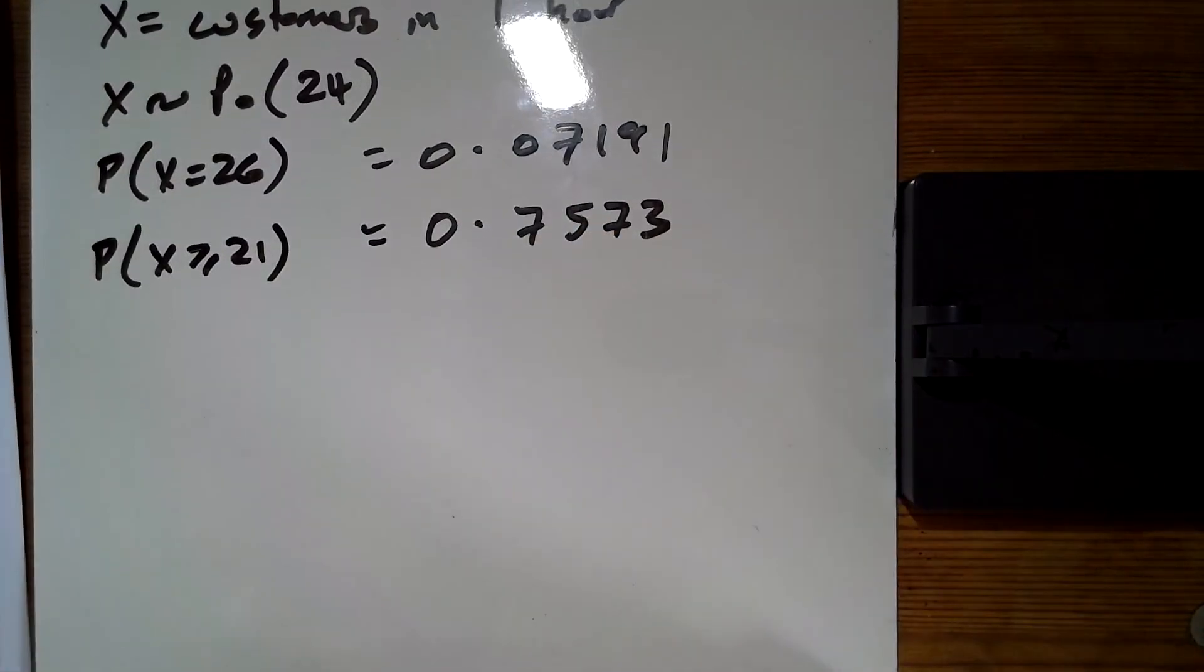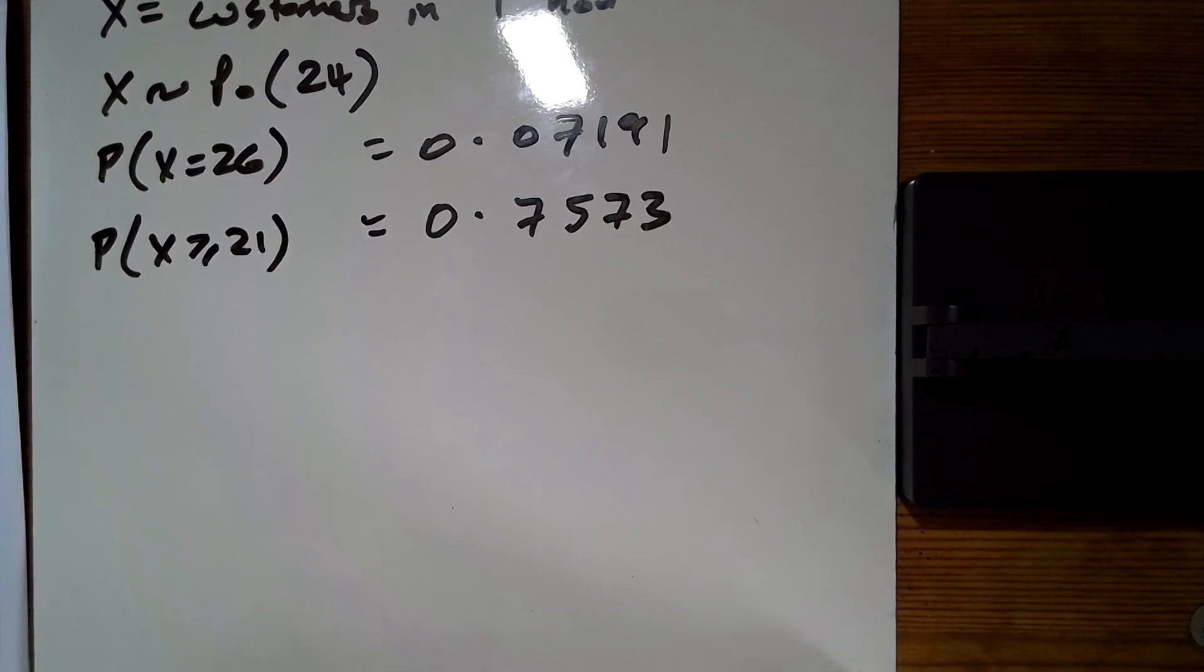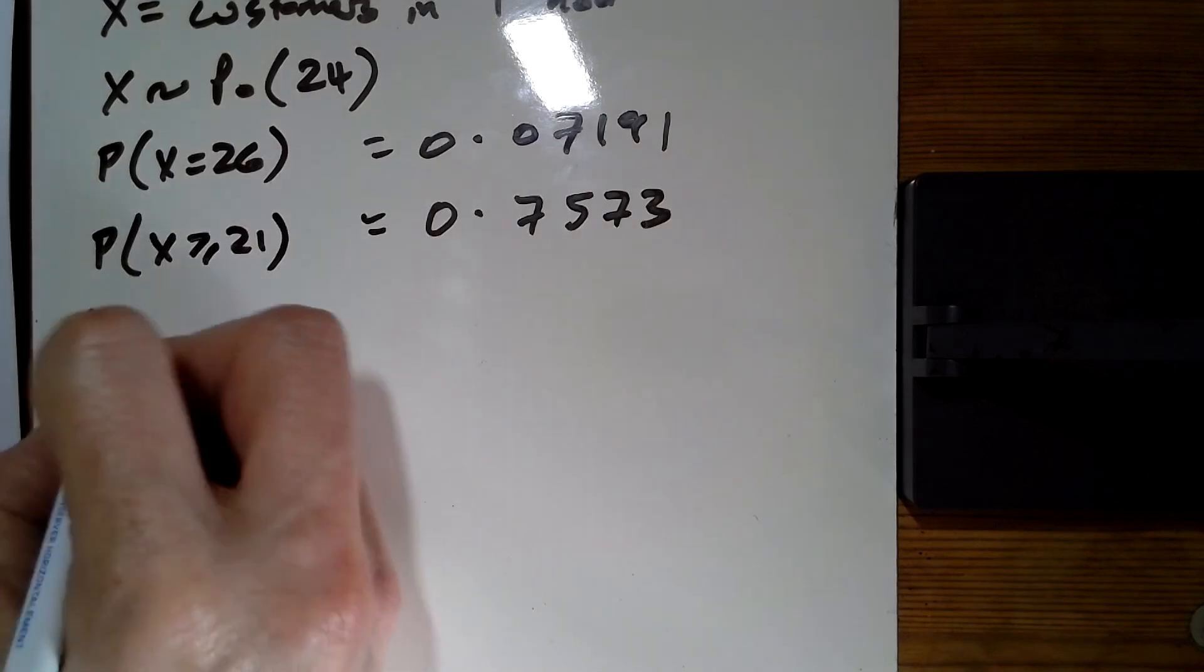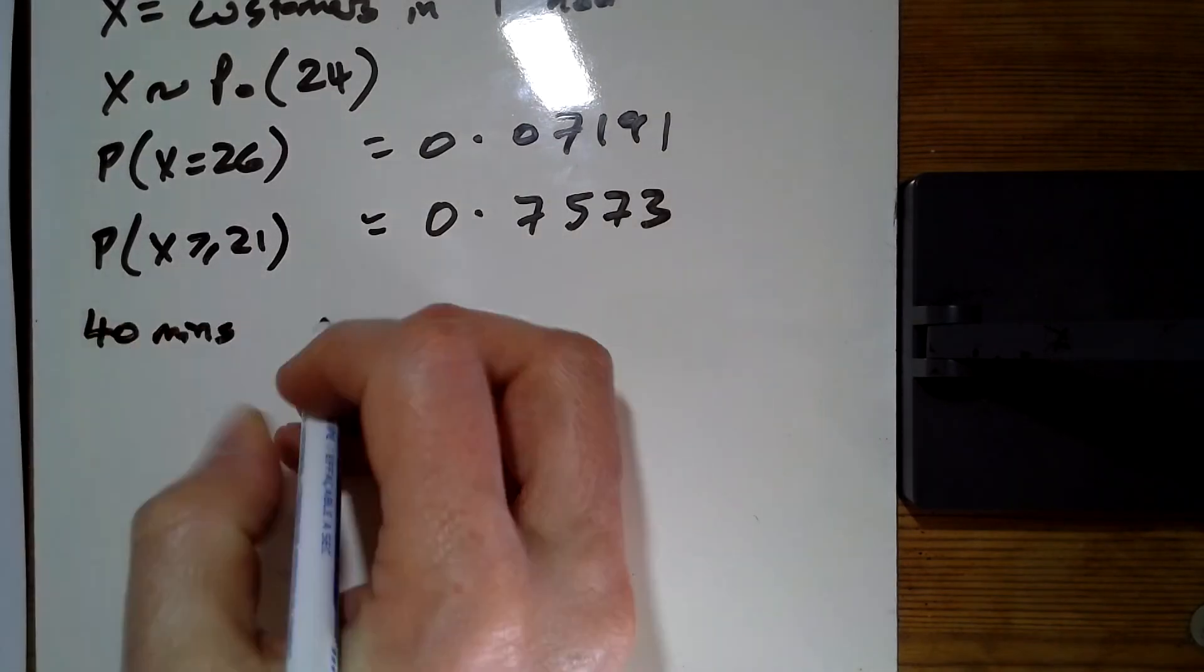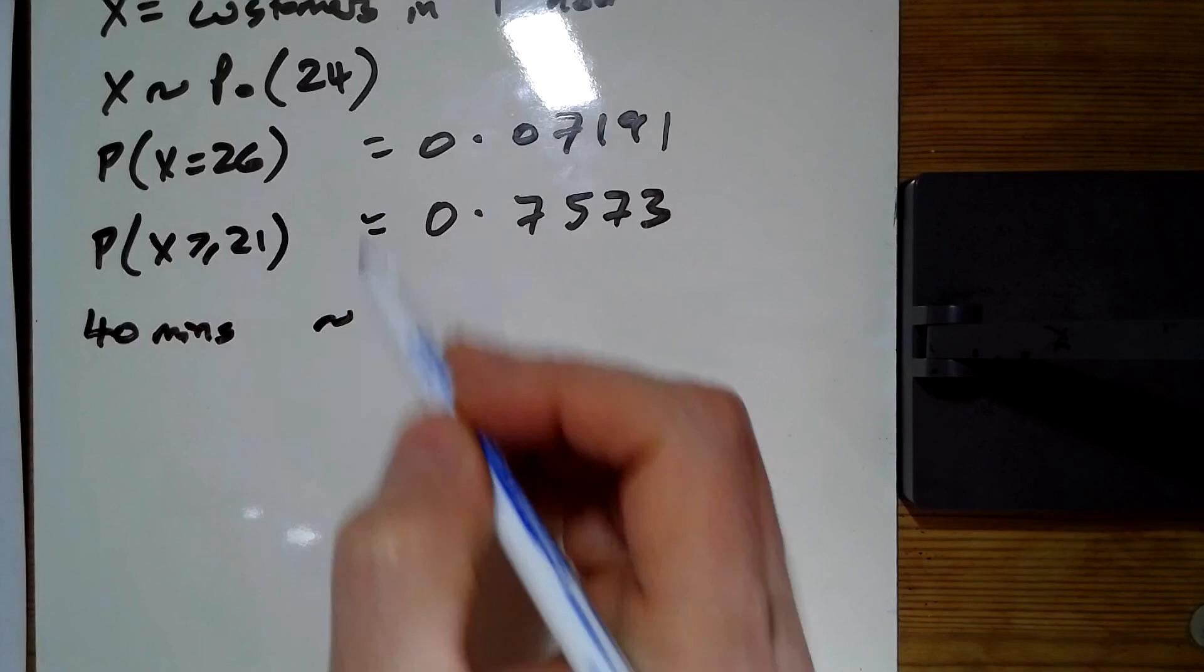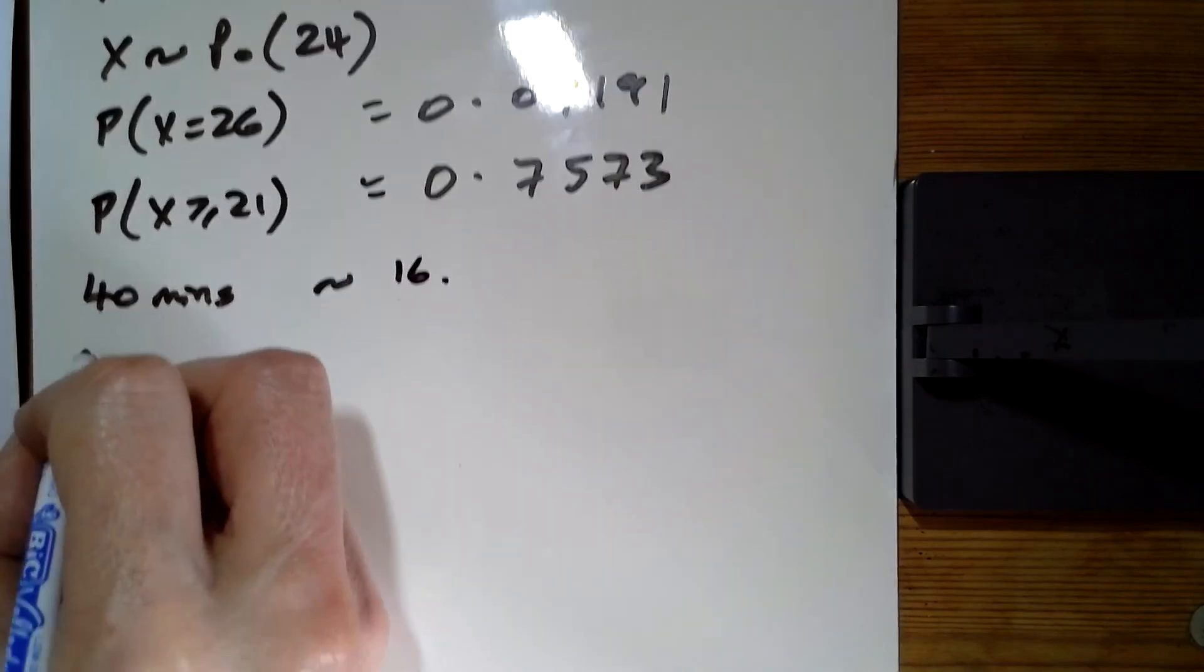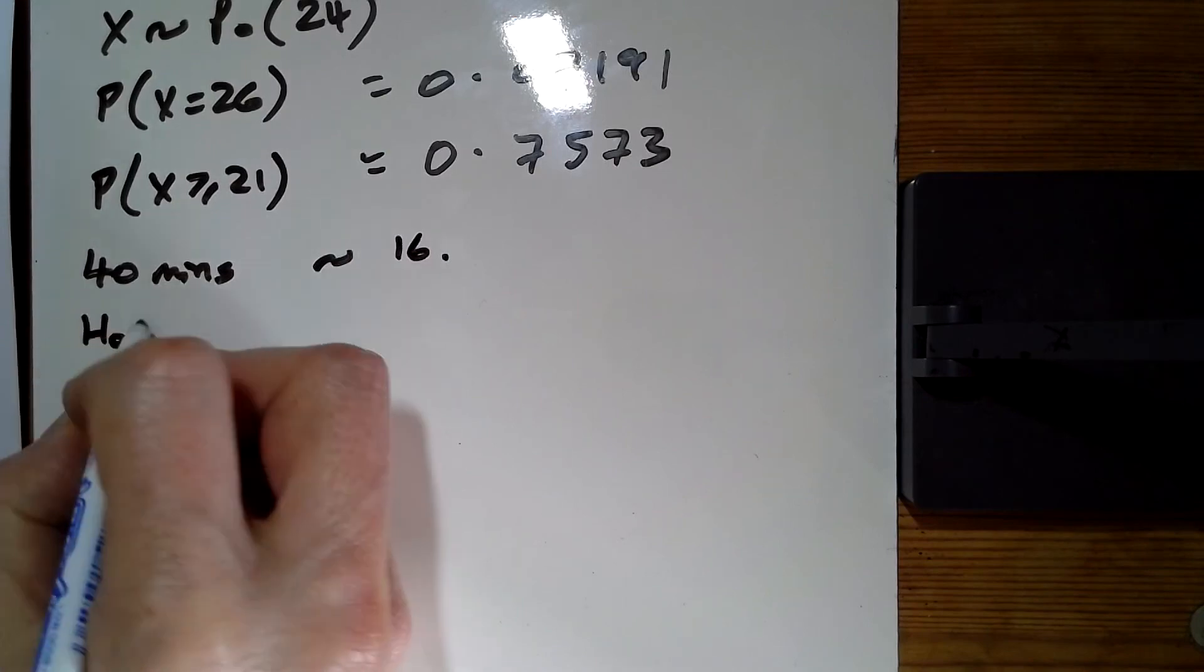A rival company is to open and selects a 40 minute period. So for 40 minutes, we would think the average would be 16.